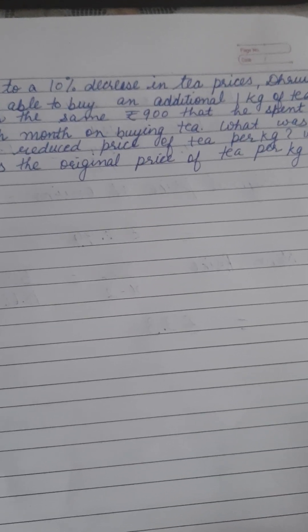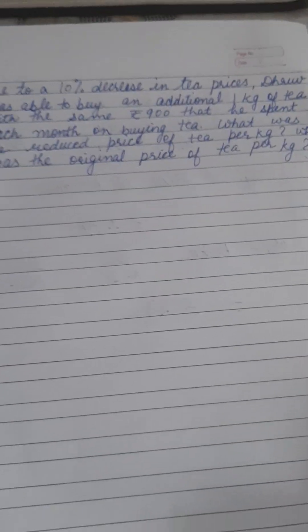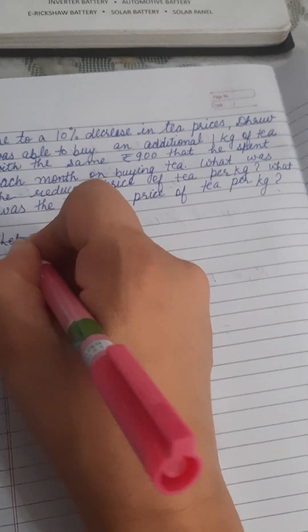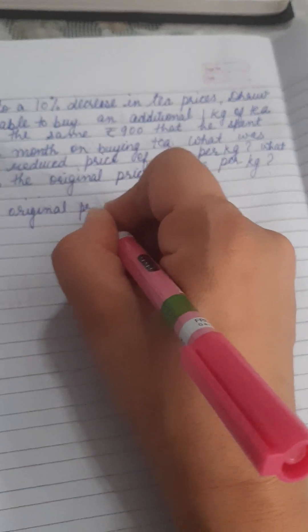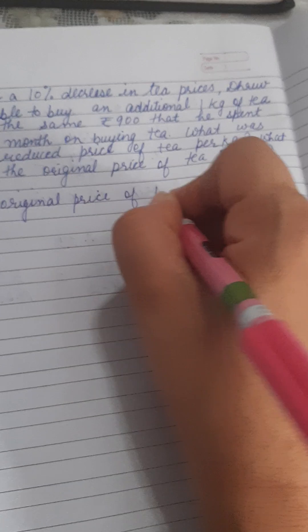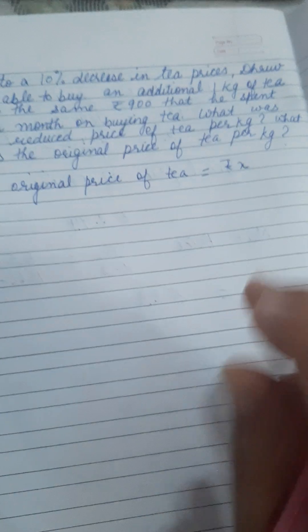What was the reduced price of tea per kilogram? What was the original price of tea per kilogram? Now let us suppose the original price of tea is X. Original price of tea is rupees X, and the price of tea is decreased by 10%.